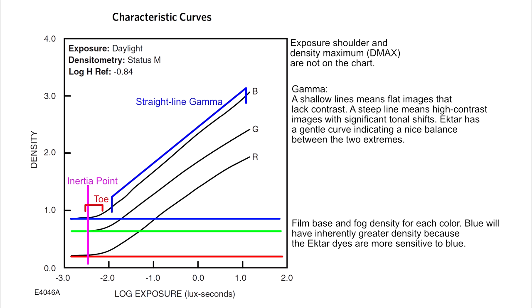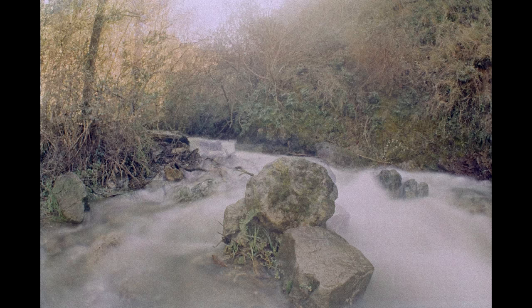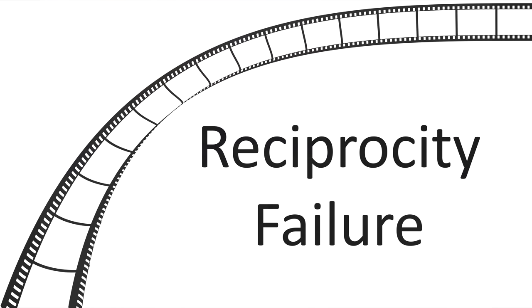There is no maximum density point provided on this chart. In real world practice, I found Ektar to have significant forgiveness for overexposure. Exposure errors up to around three additional stops of light result in high grain but recoverable images. I accidentally overexposed a couple of photos by six stops and the image quality was awful, but the lab was able to scan the images and they were recognizable.